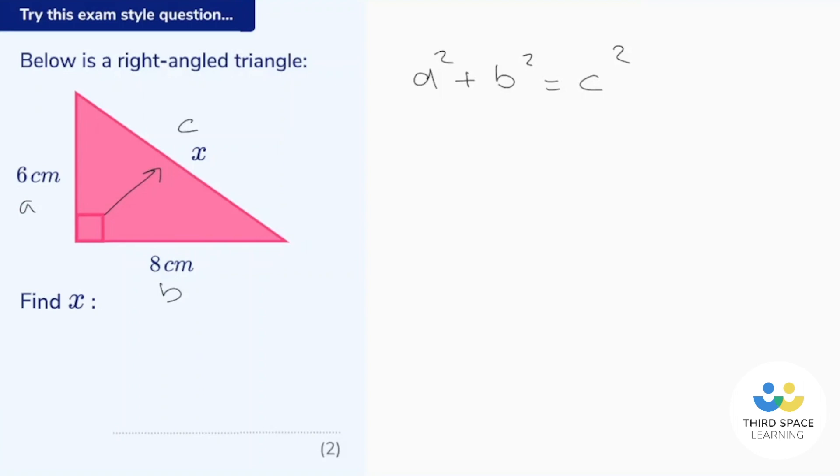Right, let's substitute then the values into Pythagoras. So a is 6 so that's 6 squared plus b which is 8 so that's 8 squared equals c which is x so that's x squared. Okay, so 36 is 6 squared. 64 is 8 squared and that equals x squared when we add them together.